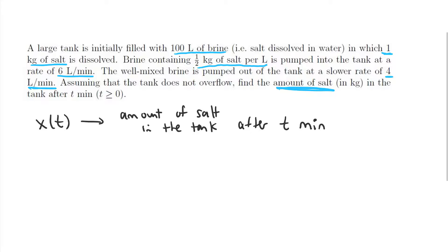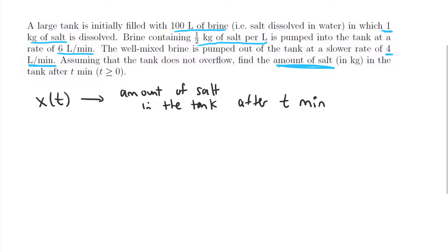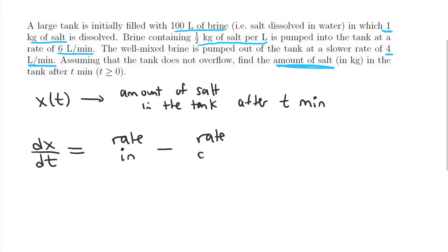We can do this by forming a differential equation that involves x, and then solving that differential equation to get the function x. The main starting point of our differential equation is that the rate of change of x — the rate of change of the amount of salt — is the rate into the tank minus the rate out of the tank. This makes sense because we have some salt coming in, we subtract off the salt coming out, and that's the change in amount of salt.